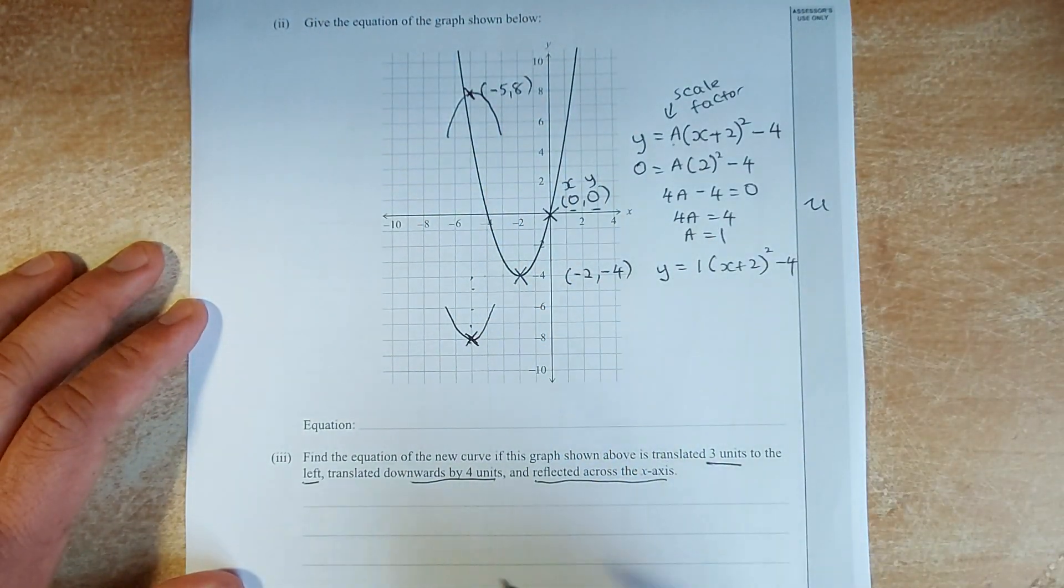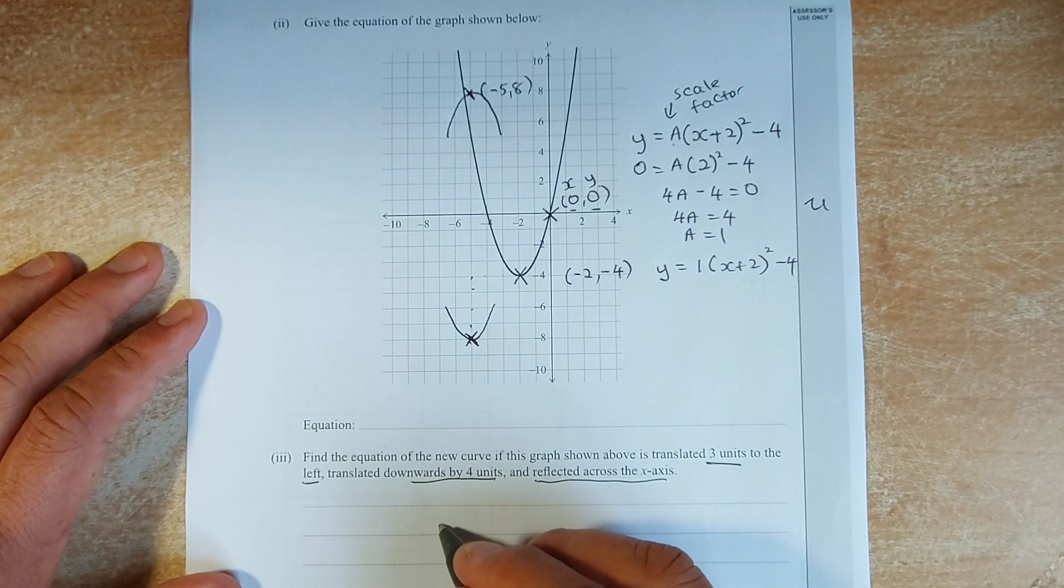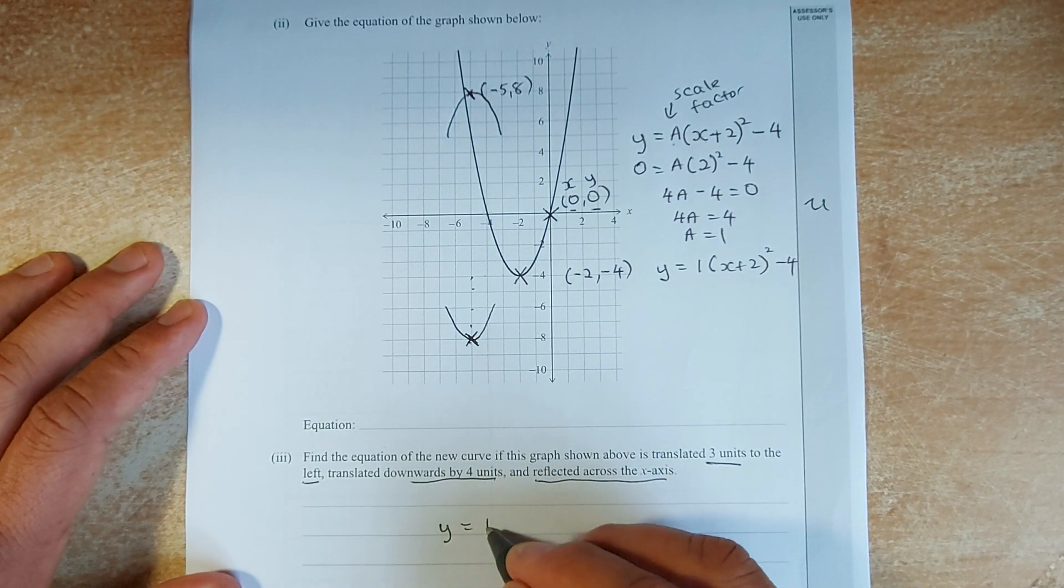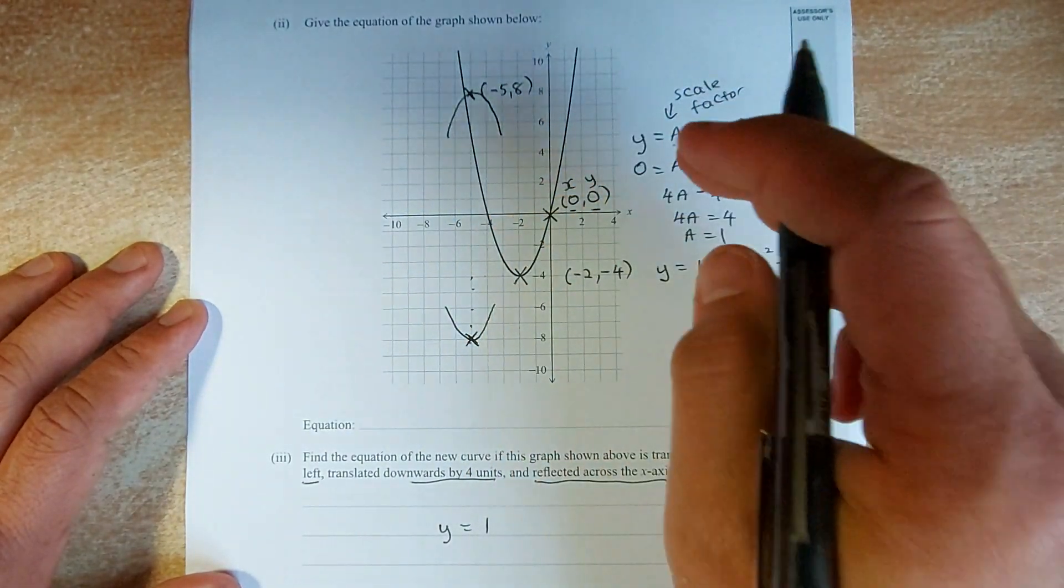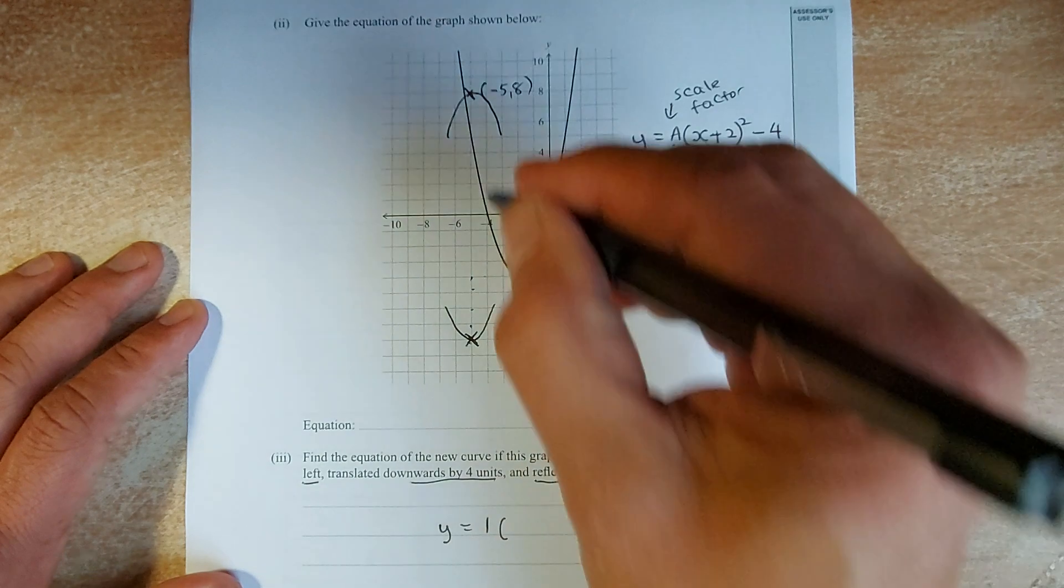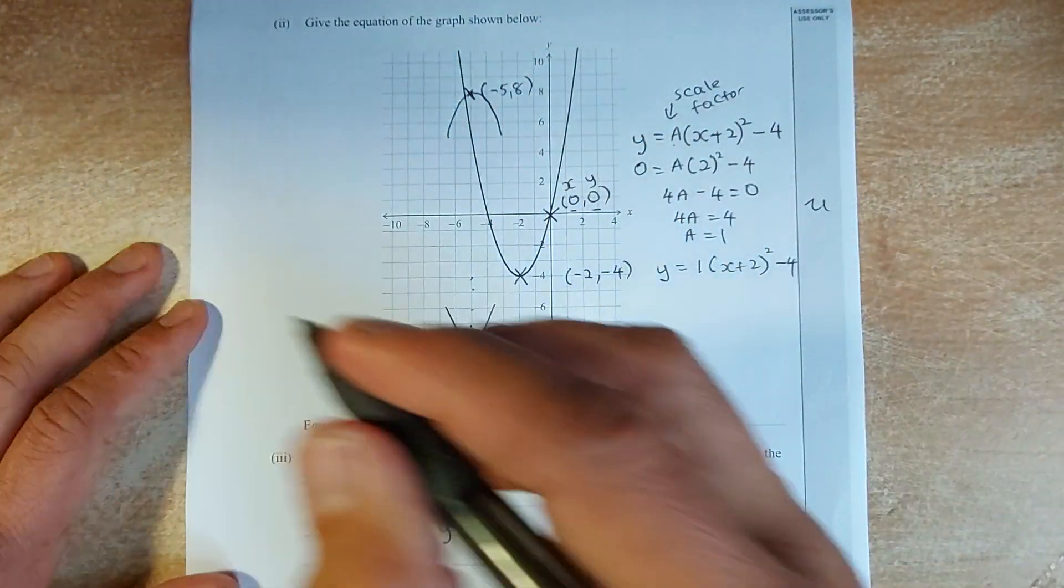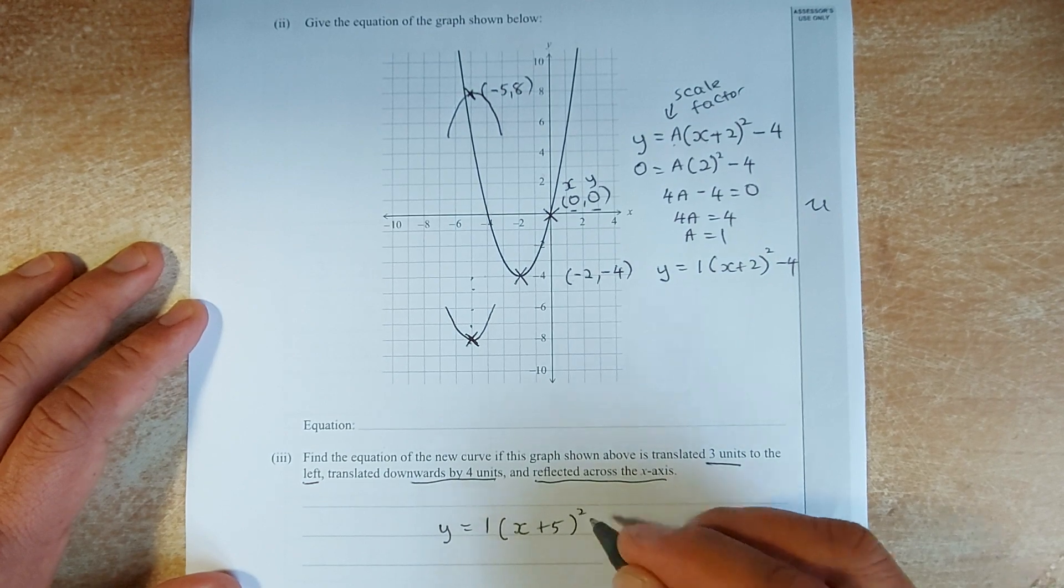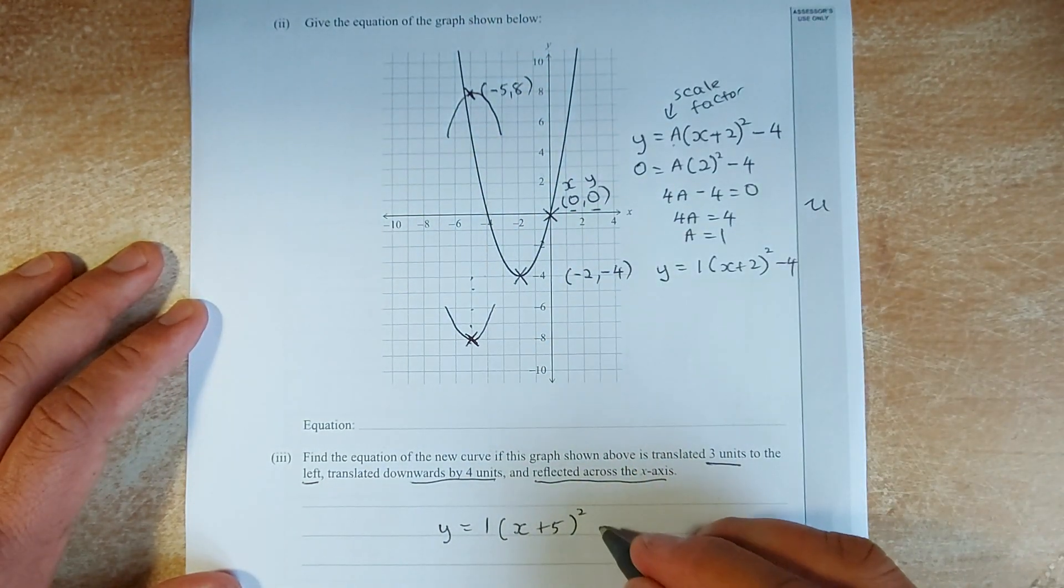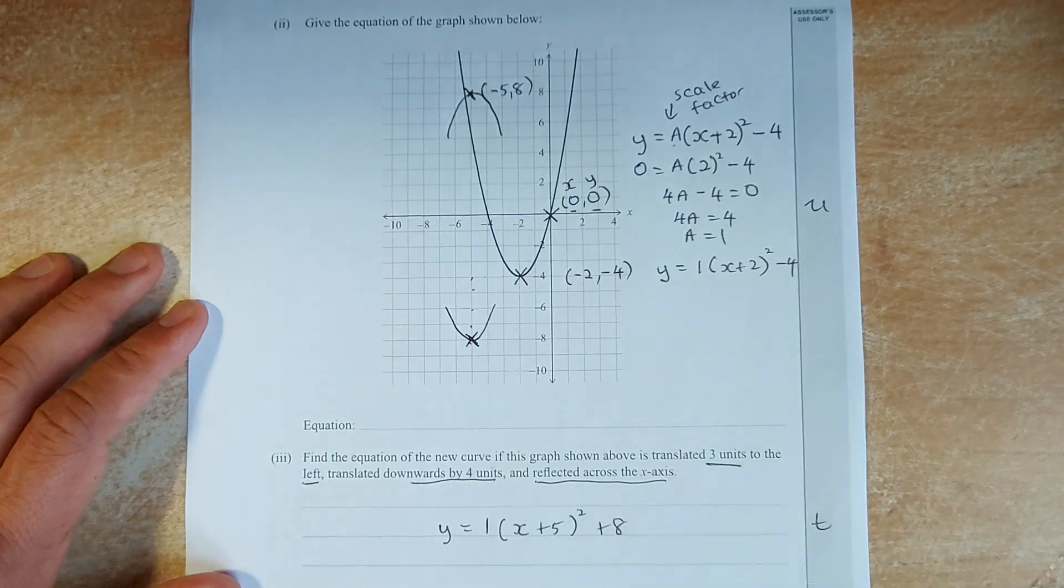So the new equation is very simple, it's going to be y, the scale factor remains the same, because the slimness of the graph does not change, so the scale factor remains the same. Now, instead of, you move 5 to the left, your equation is going to be x plus 5 squared, and it's going up 8 plus 8, and that is an excellence.